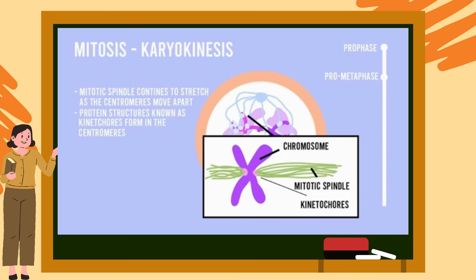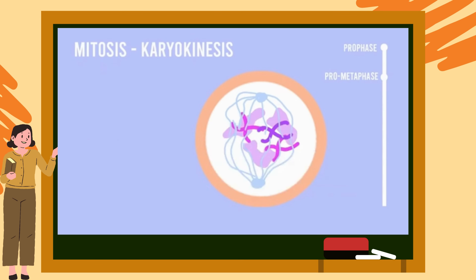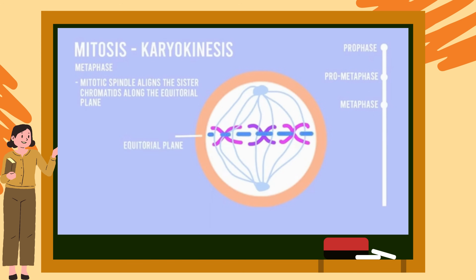The third step of karyokinesis is known as metaphase. During metaphase, the mitotic spindle aligns all the captured and condensed sister chromatids along the equatorial plane — otherwise known as the metaphase plate — which exists midway between the two poles of the cell.